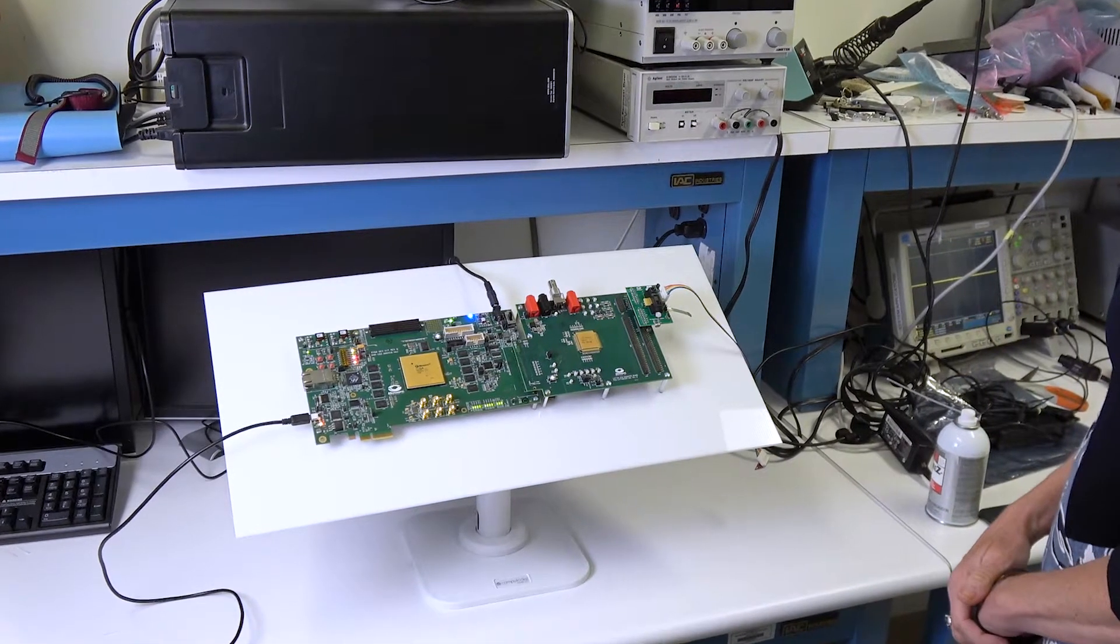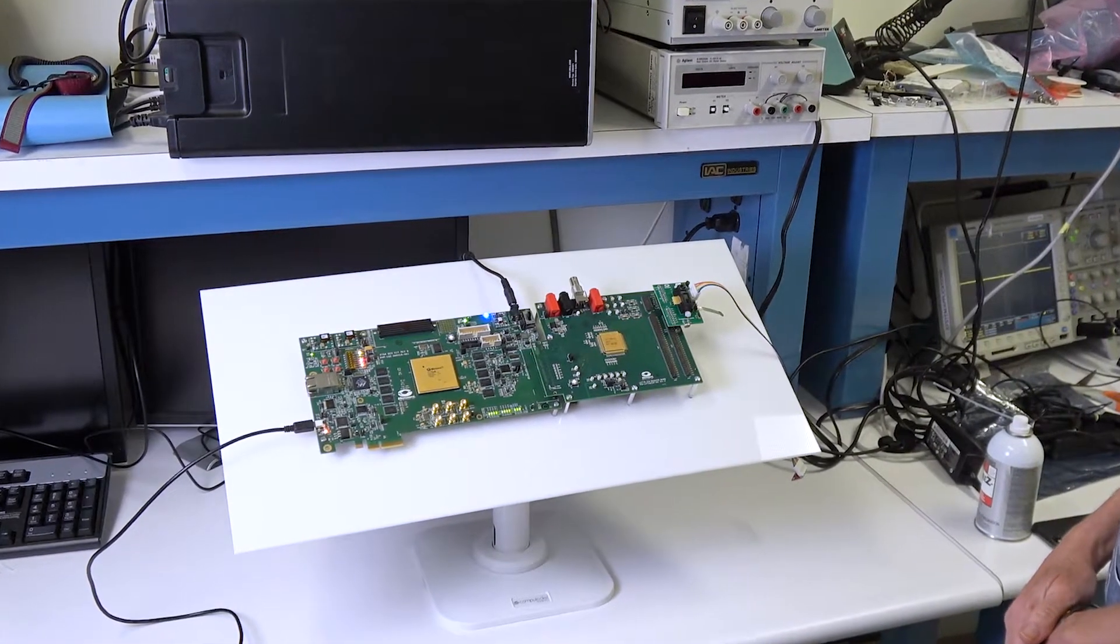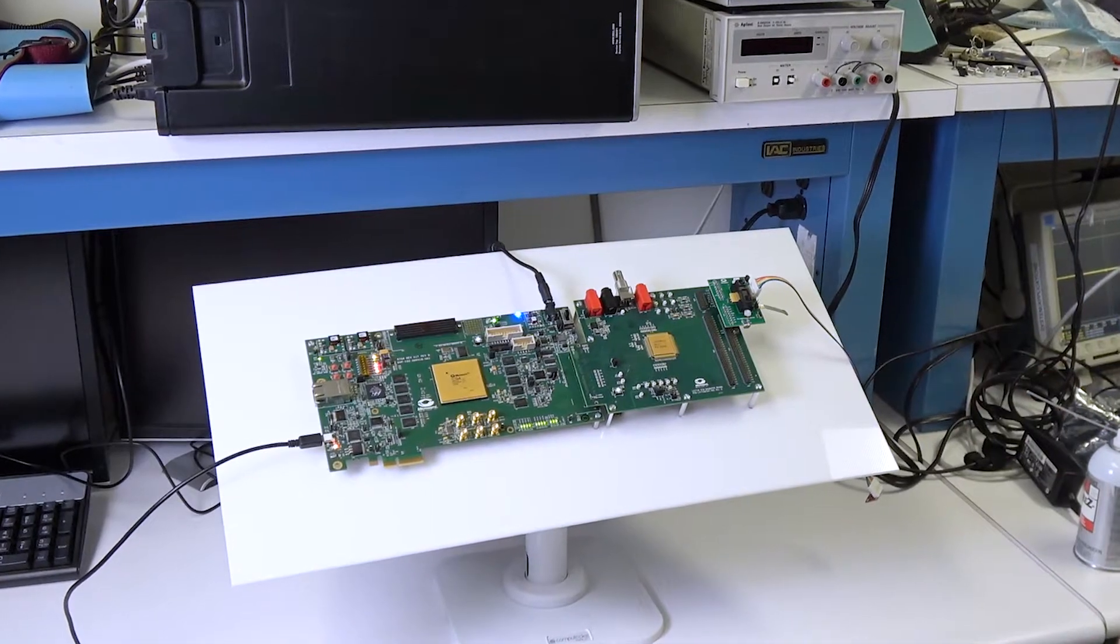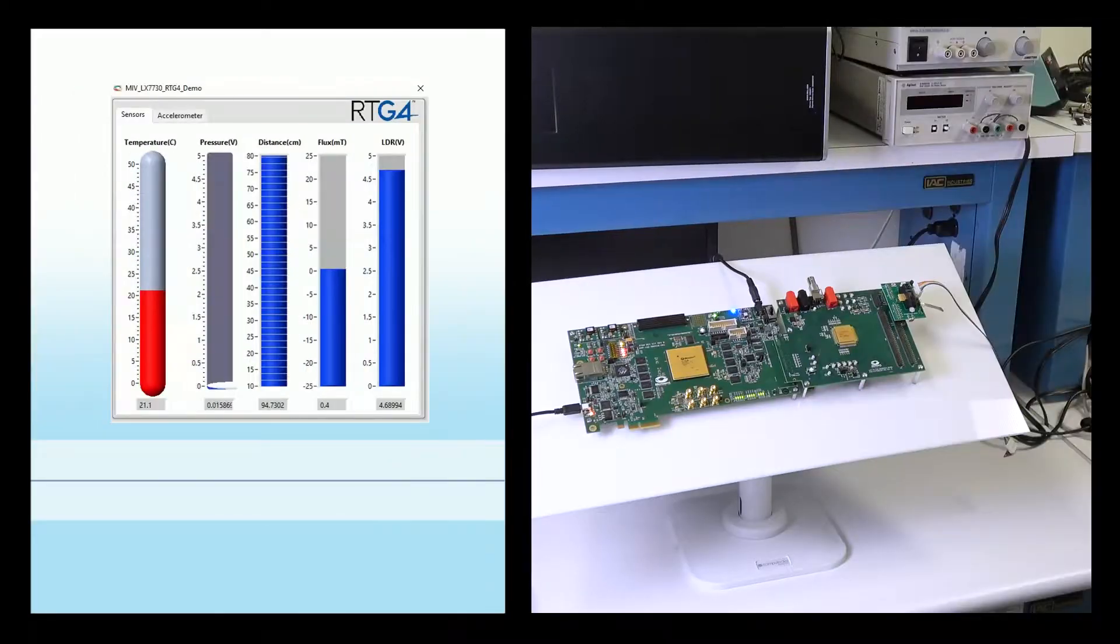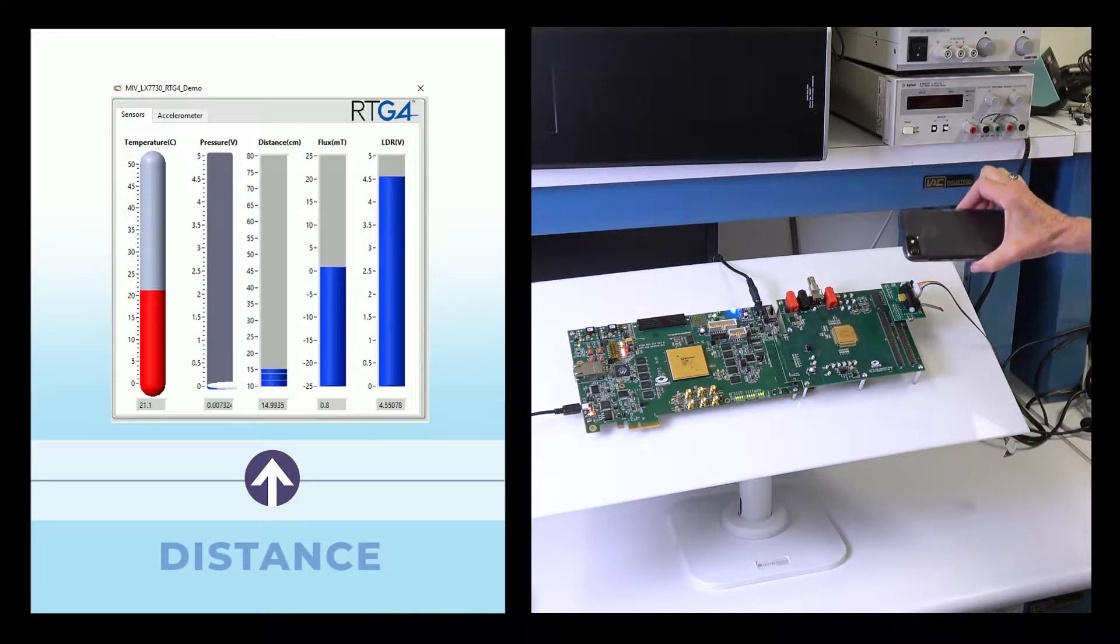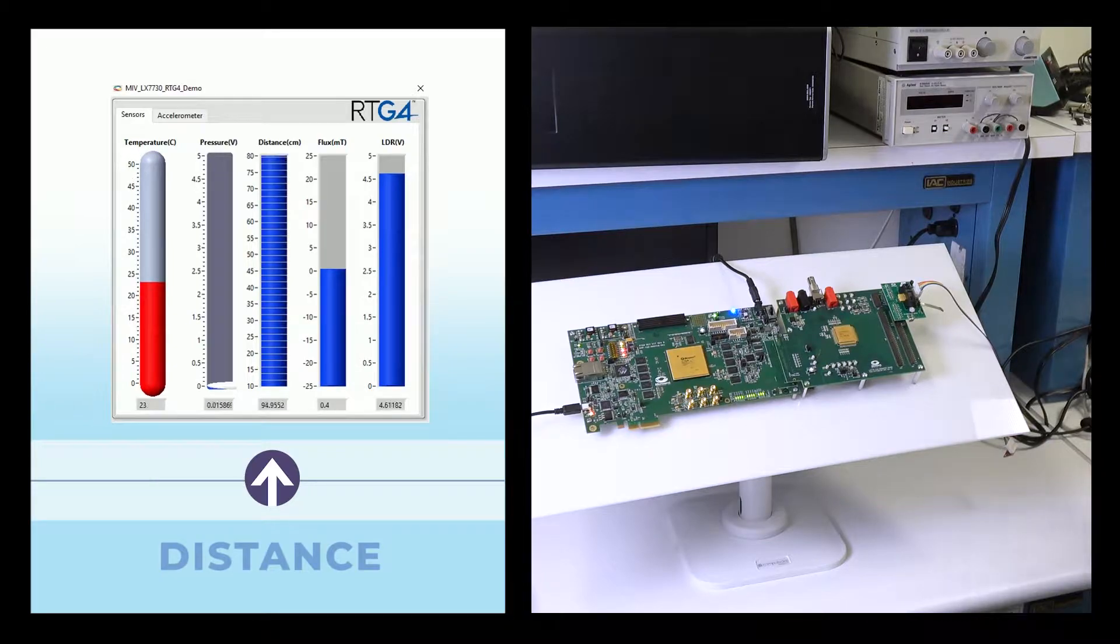I'm going to show you the six sensors on this sensor board. The first sensor is for distance, located right here. I'm going to move my phone up and down towards that distance sensor, and you can see that measurement.